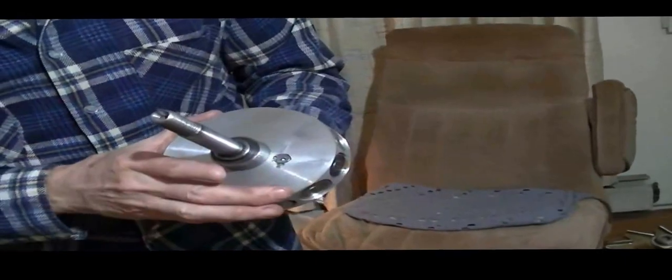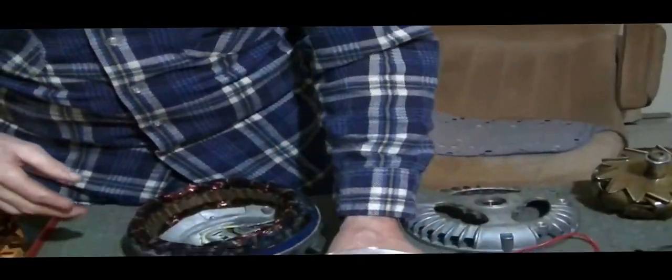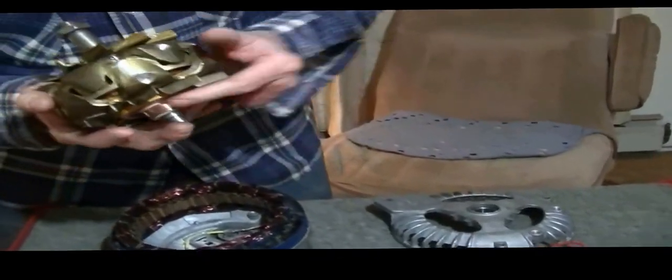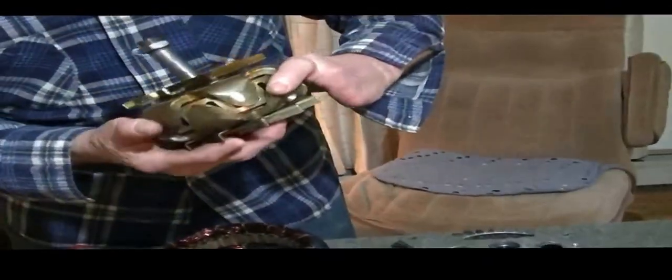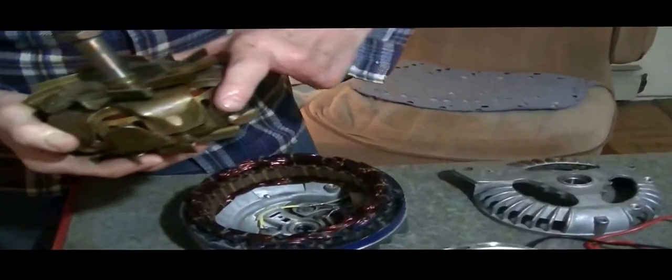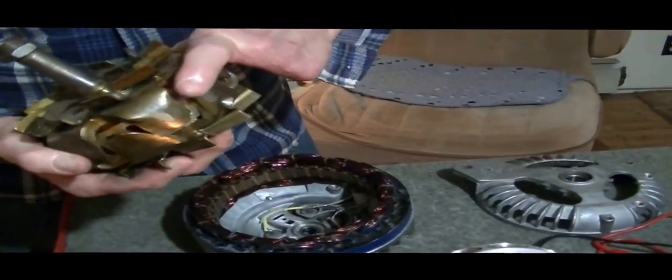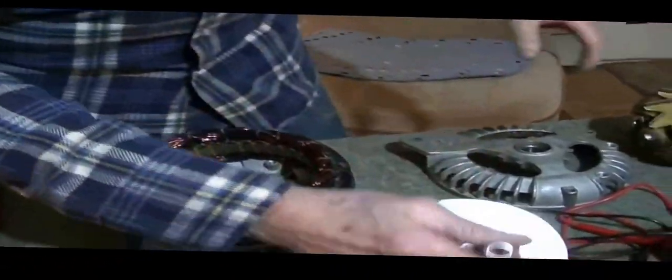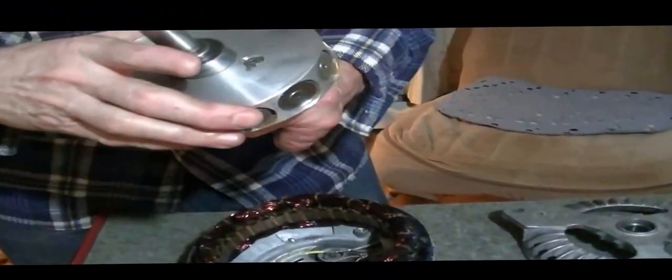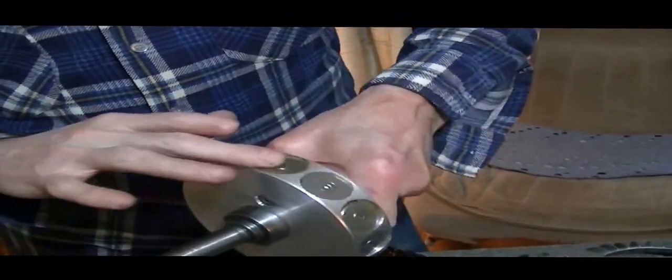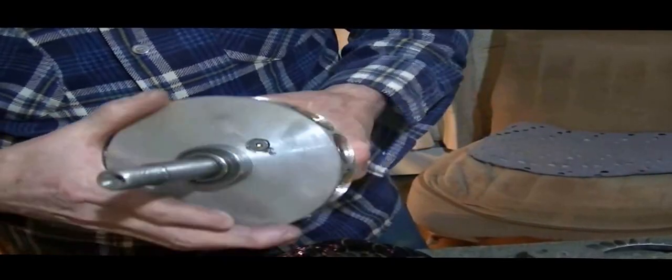Now this diameter right here has to be the identical diameter to these poles right here. So with this alternator that we picked out, this is a four and three quarter inch rotor here. So we had to make up a four and three quarter inch solid rotor here and then countersink our super magnets into this surface.